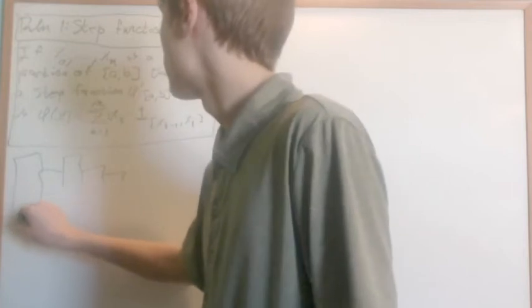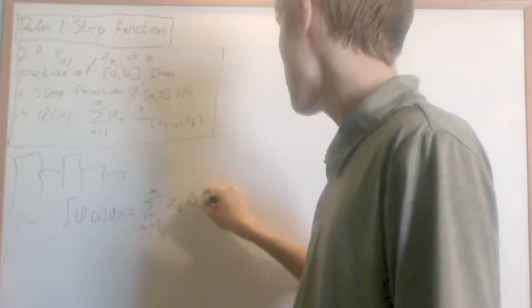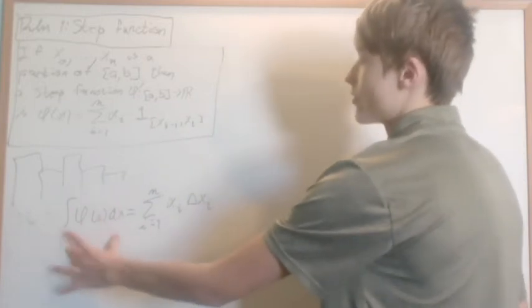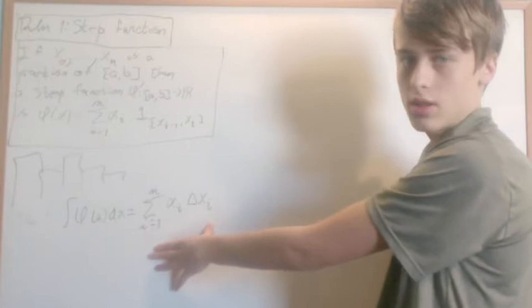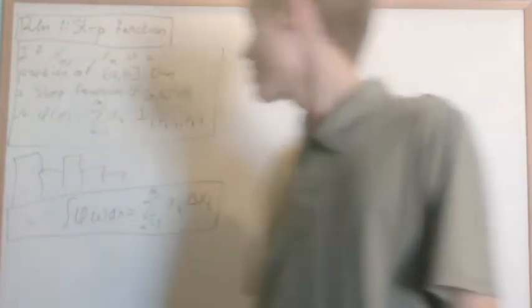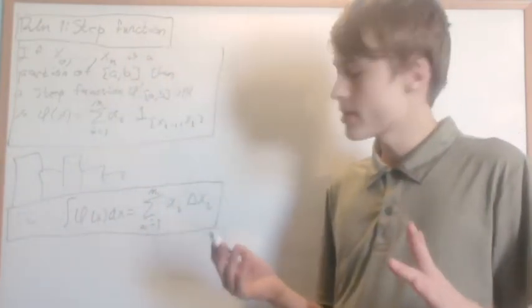Theorem 1: the integral of a step function is simply equal to the sum from i equals 1 to n of αᵢ Δxᵢ. The Riemann integral of a step function is just the area of all the rectangles added up. You can prove this as a homework exercise by looking at the previous video's definition.